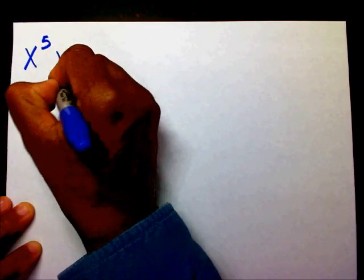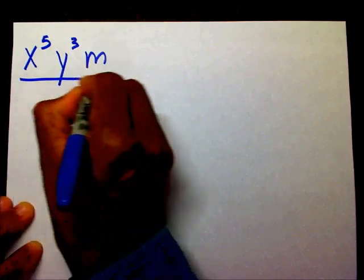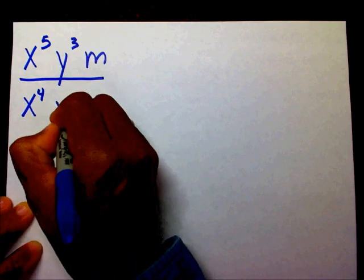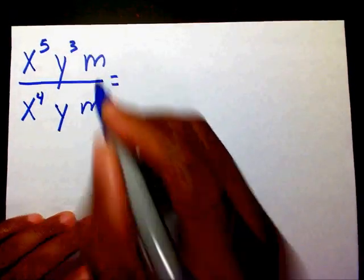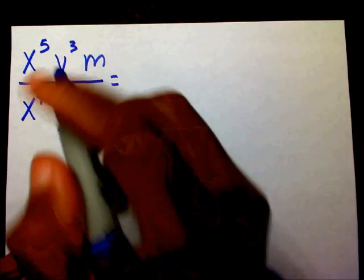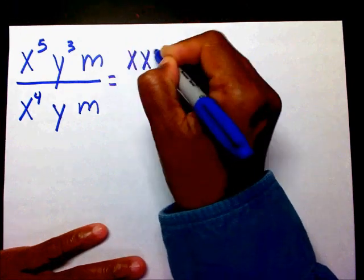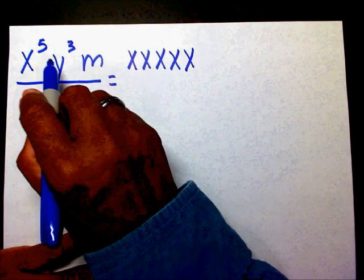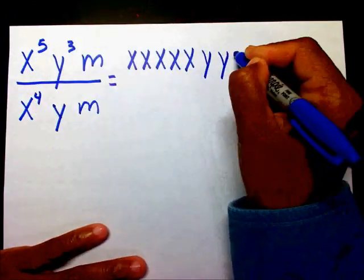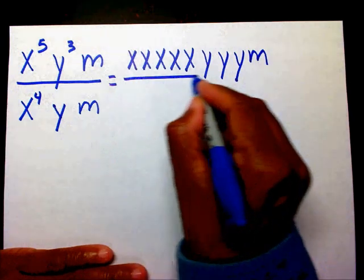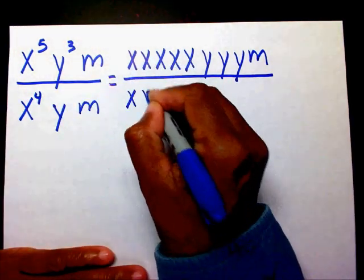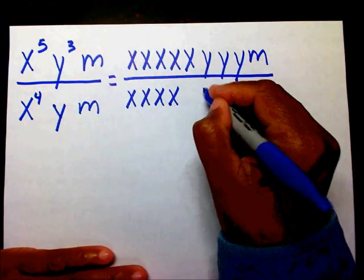Let's try another one. I have x to the fifth, y to the third, and m over x to the fourth, y to the fourth, and m. Let's break it down: x to the fifth means five x's, y to the third means three y's, and I have one m in the numerator. In the denominator, x to the fourth is four x's, then one y, and one m.